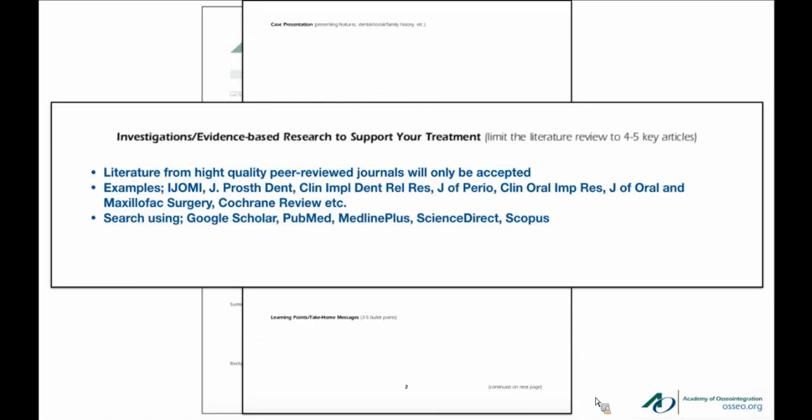The committee will only accept peer-reviewed research articles from high-quality journals — for example, the IJO, the Journal of Prosthetic Dentistry, Clinical Implant Dentistry and Related Research, the Journal of Periodontics, and the Cochrane Review. We are not looking for trade journals like Dental Insights or Dentaltown. They're not high-quality peer-reviewed research journals — that is what we're looking for.